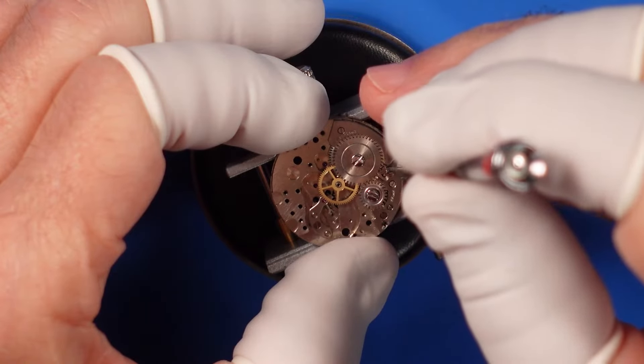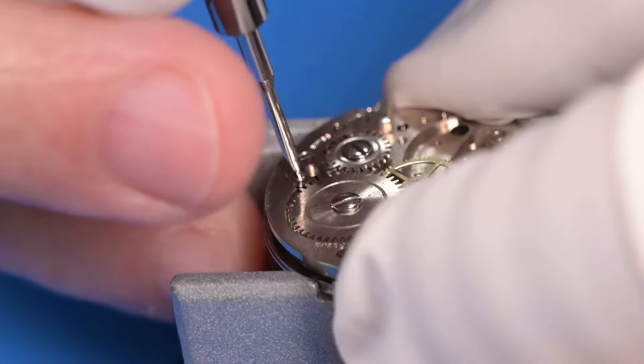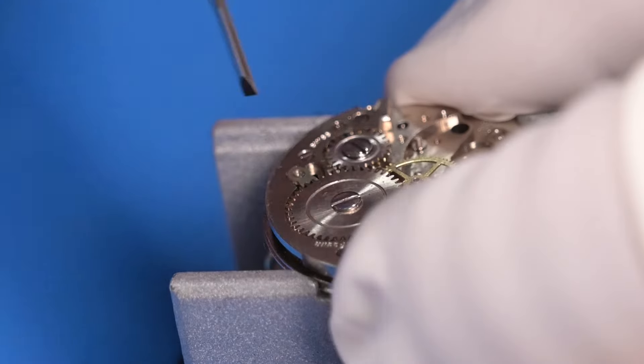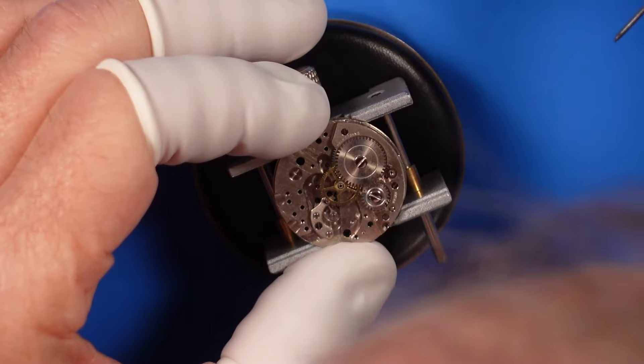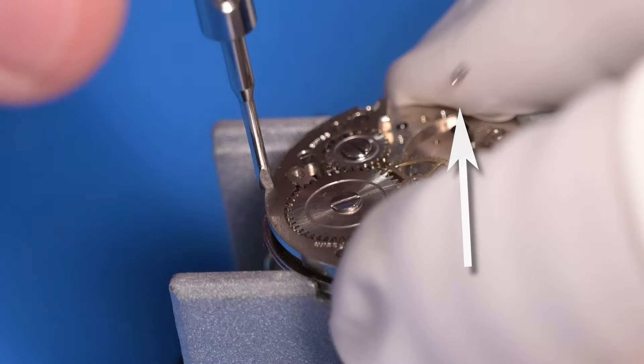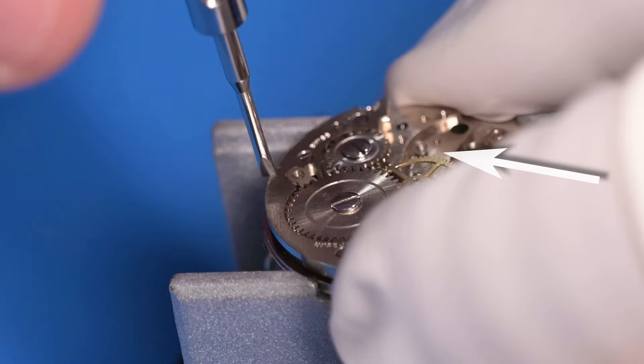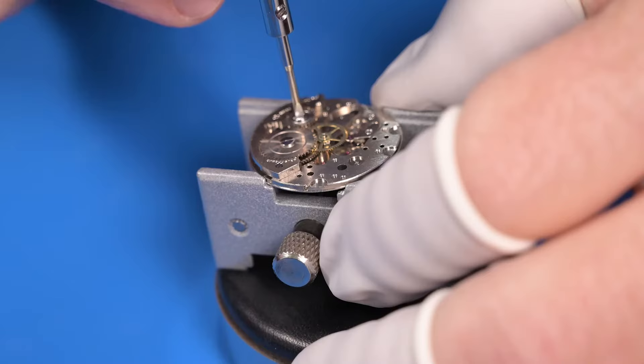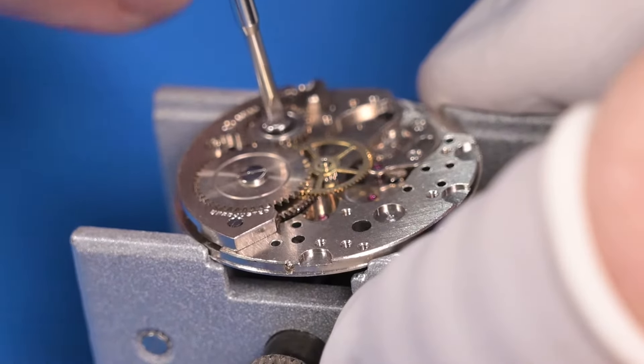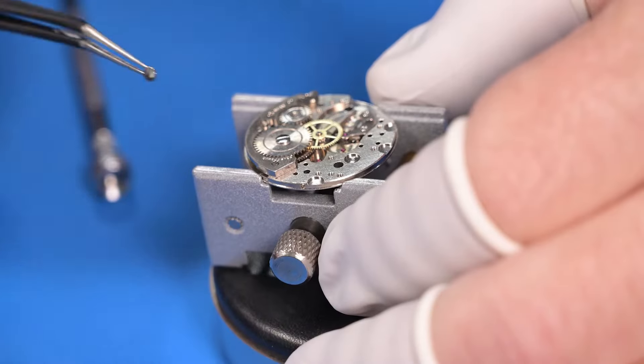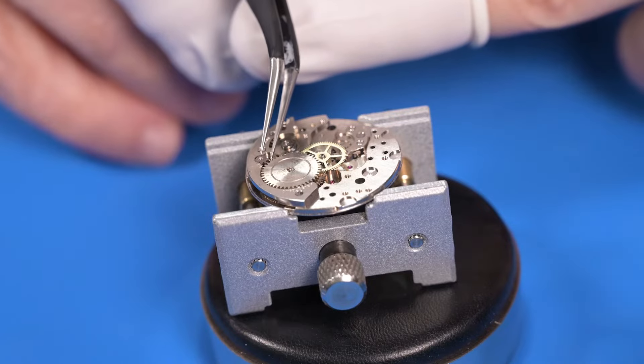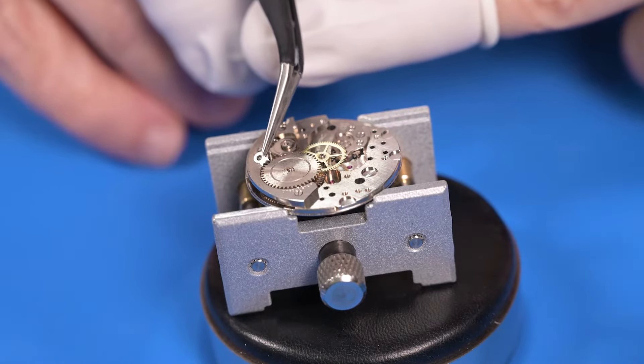As I remove this hour wheel bridge, I want to mention the importance of keeping your screwdriver perpendicular to the screw head and applying gentle but firm downward pressure. I will release the click one more time to relieve any remaining mainspring pressure before moving on. What just happened? Oh, that's the escape wheel. I guess that's why they call it that. I'm going to remove the click, which is held under pressure by a small click spring. Again, screwdriver technique is very important.